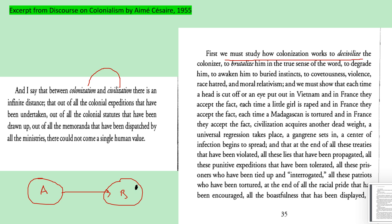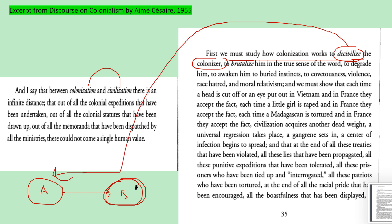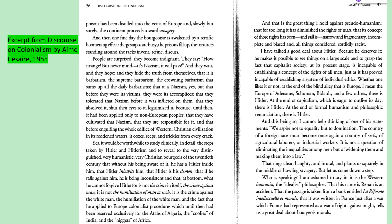The author writes: 'We must study how colonization works to de-civilize the colonizer, to brutalize him in the true sense of the word, to degrade him, to awaken him to buried instincts.' His argument is that even though Civilization A has control over Civilization B, A actually becomes de-civilized — not B — because A engages in horrific acts. He brings up the Nazis and speaks extensively about them here.